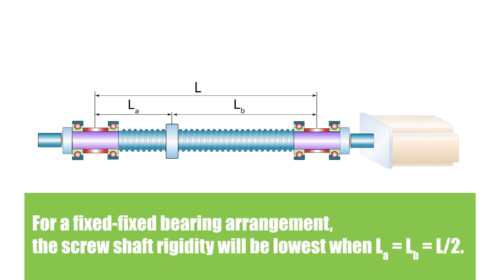In the fixed-fixed arrangement, the rigidity will be lowest when the ball nut is located halfway between the two fixed ends. In the image shown here, L-sub-A and L-sub-B would be equal.